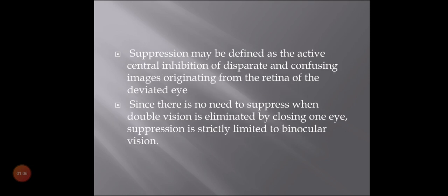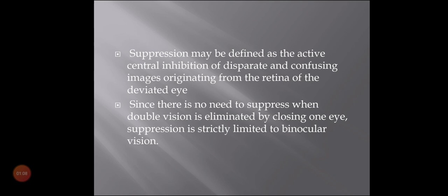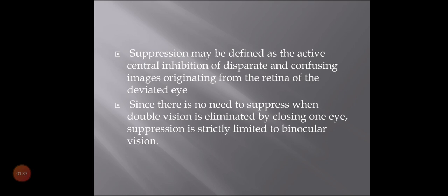Suppression may be defined as active central inhibition of disparate — that means dissimilar and confusing — images originating from the retina of the deviating eye. Since there is no need to suppress when double vision is eliminated by closing one eye, suppression is strictly limited to binocular vision. In monocular vision, suppression does not occur.